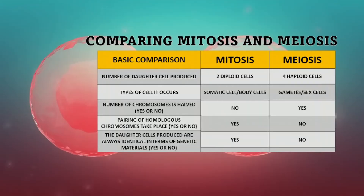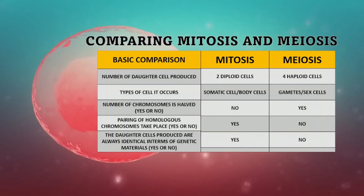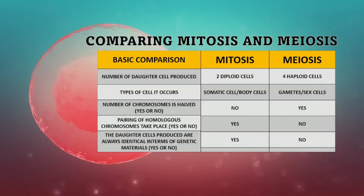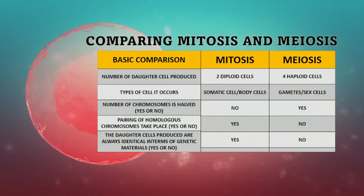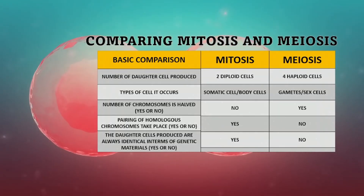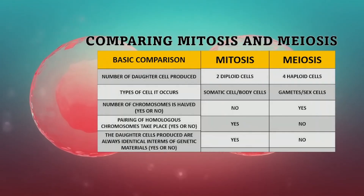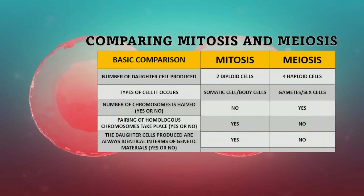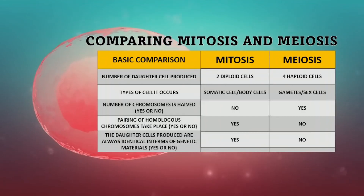Now let's have meiosis. For meiosis, the number of daughter cells produced is four haploid cells. For the type of cells where meiosis occurs, it is in gametes or sex cells. For the number of chromosomes being halved — for meiosis it is yes. For pairing of homologous chromosomes taking place in meiosis, the answer is no. And for the daughter cells produced being always identical in terms of genetic material — for meiosis, the answer is no.